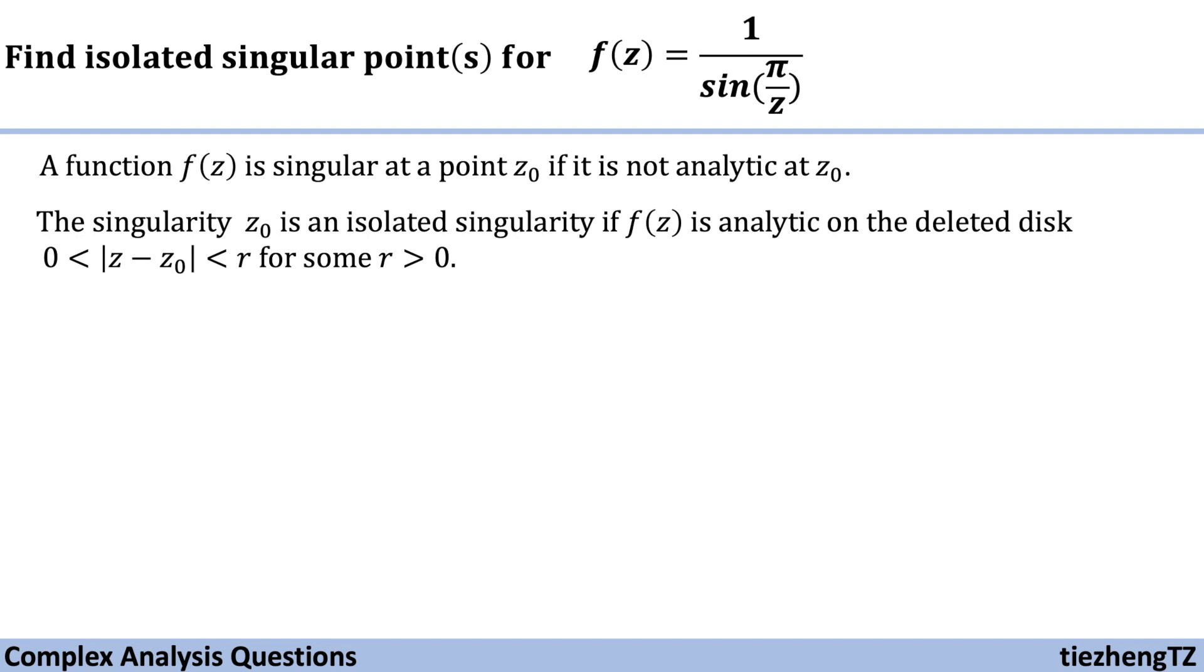A function f(z) is singular at a point z₀ if it is not analytic at that point. The singularity z₀ is an isolated singularity if the function is analytic on the deleted disk, where |z - z₀| is between 0 and r for some positive r values.